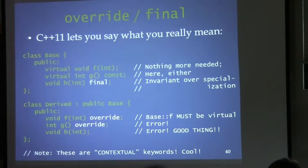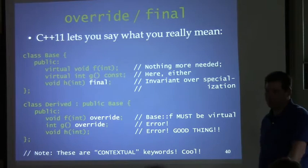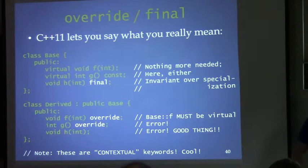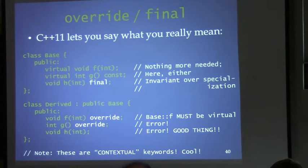Whether to put `virtual` on a derived function has always been a religious issue. One argument says it lets everybody know it's virtual; the other says it introduces a new virtual function and documents that. But with `override`, you can't argue it's useful because it's not giving you any more useful information.